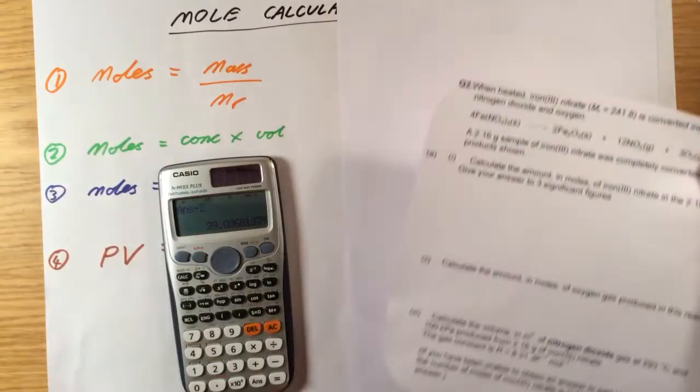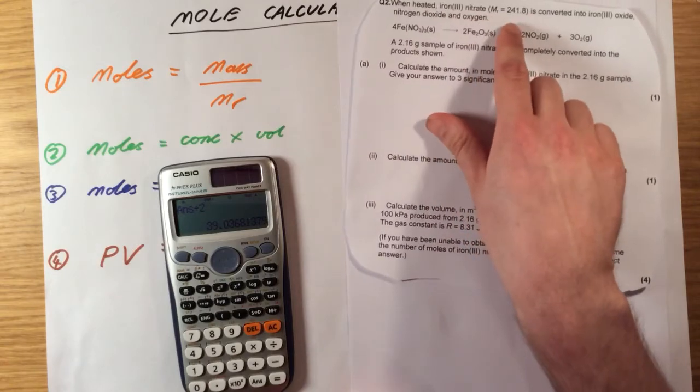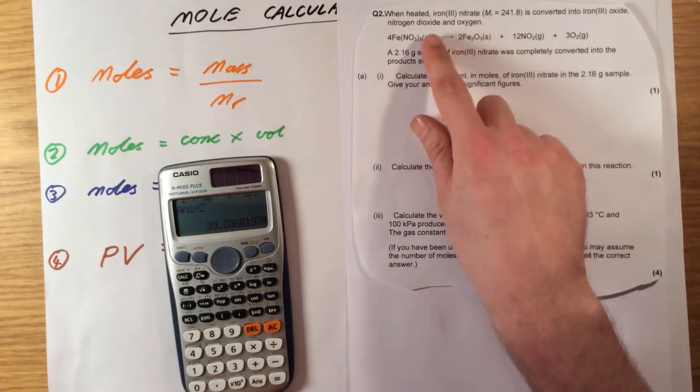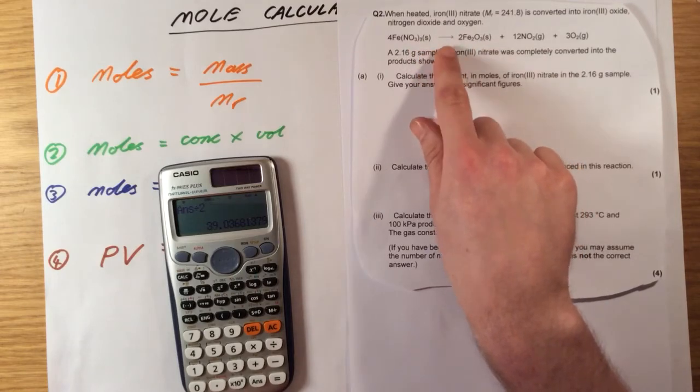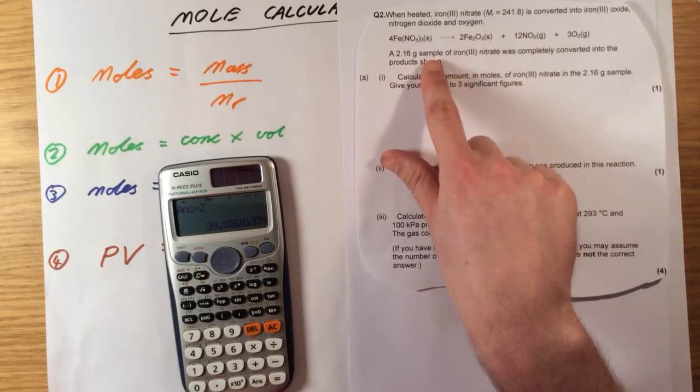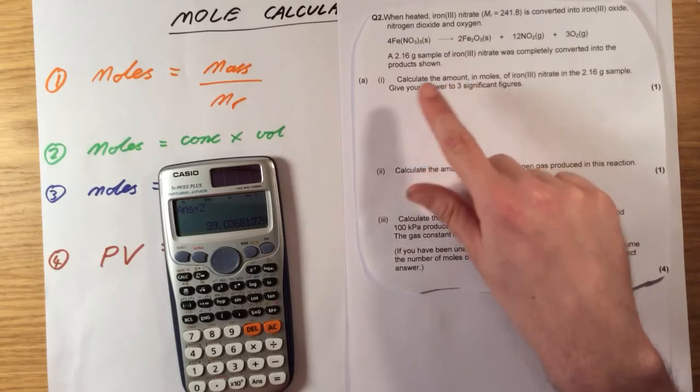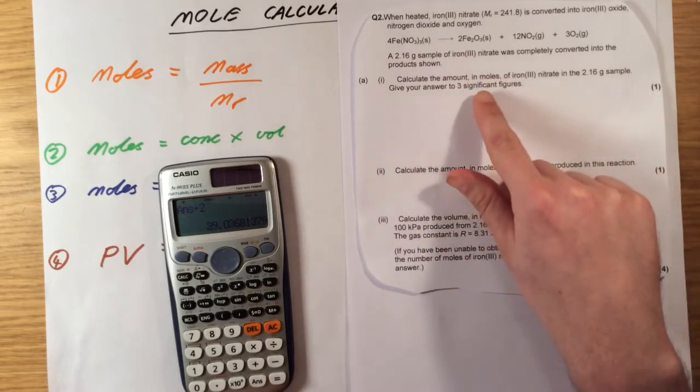Next question. When heated, iron-free nitrate is converted into iron-free oxide, nitrogen dioxide, and oxygen. So lots of molecules reacting here. A 2.16 gram sample of iron-free nitrate was completely converted into the product shown. Calculate the amount in moles of iron-free nitrate in the 2.16 gram sample. Give your answer to three sig figs.